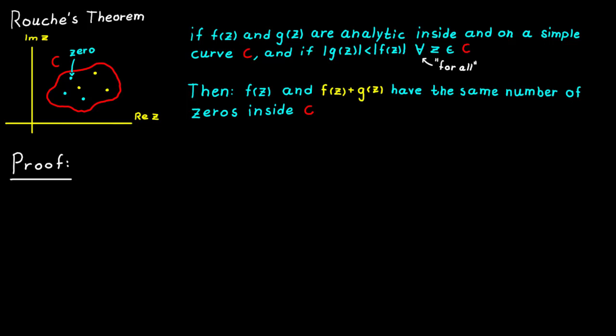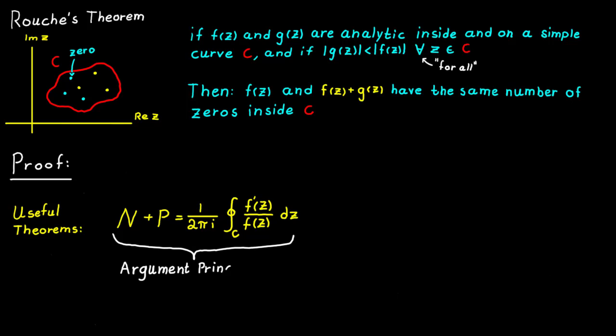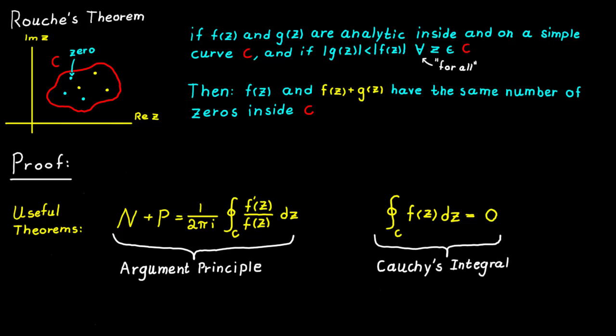We are going to use two other theorems to prove this one. The first is the argument principle theorem, which states that the number of zeros plus the number of poles for a meromorphic function is equal to a certain integral. The second theorem is Cauchy's integral theorem, which states that an analytic function integrated over a simple closed curve c is always equal to zero.